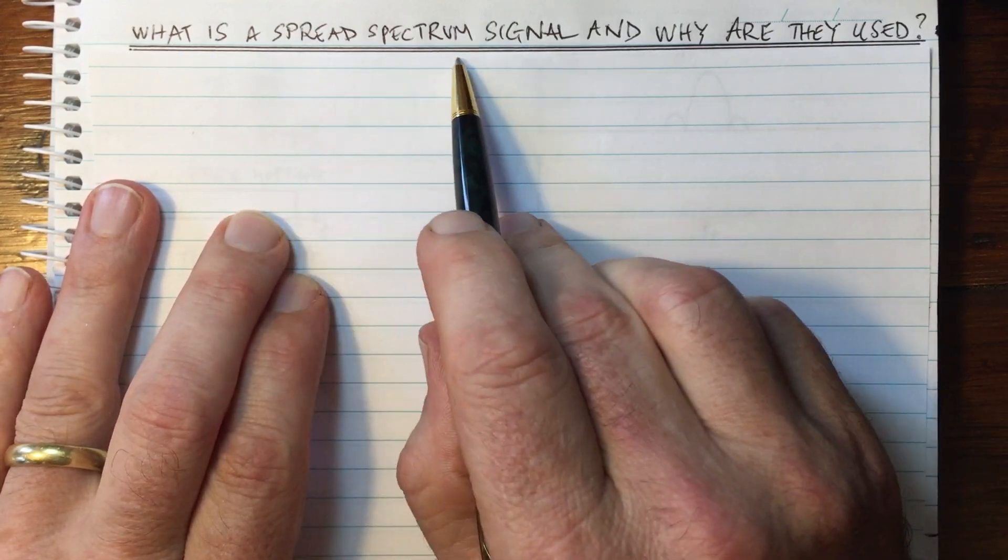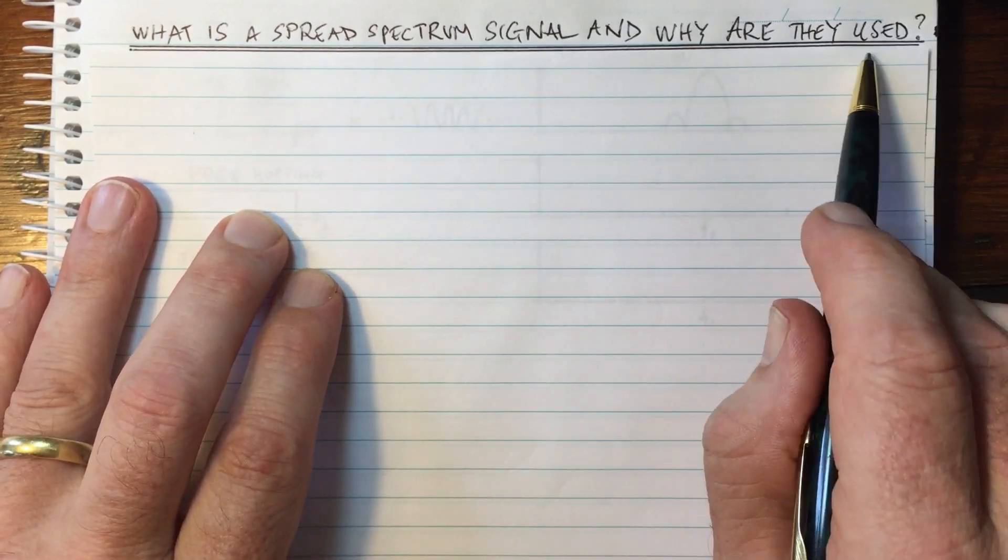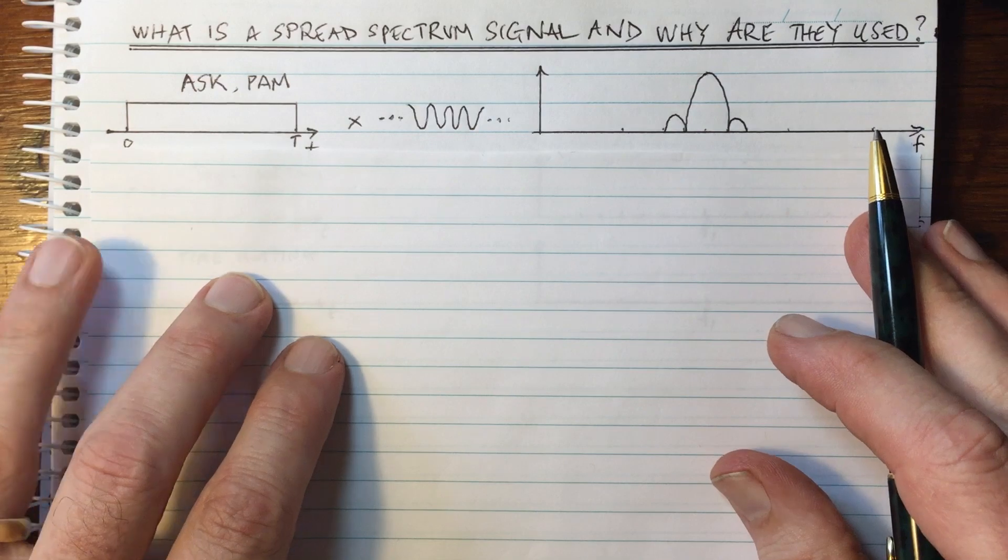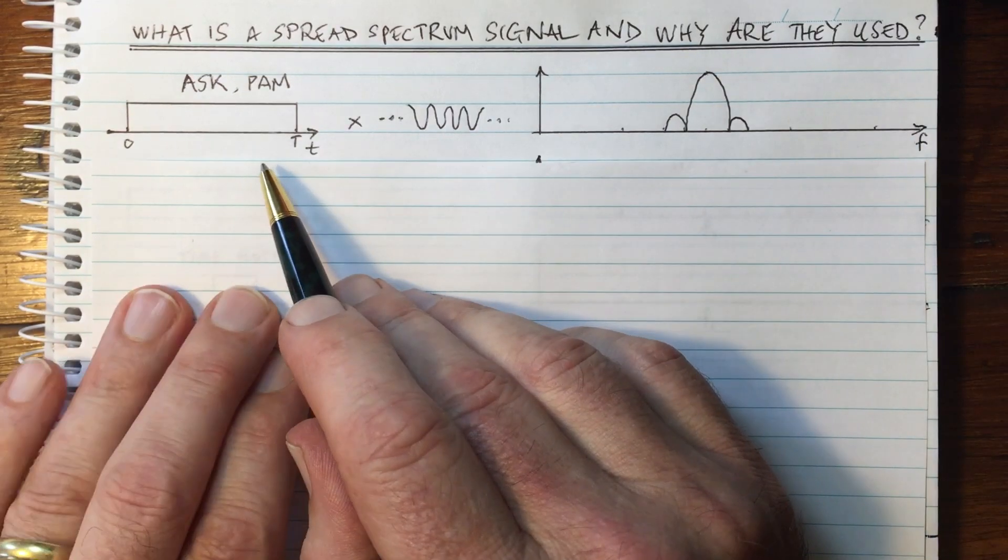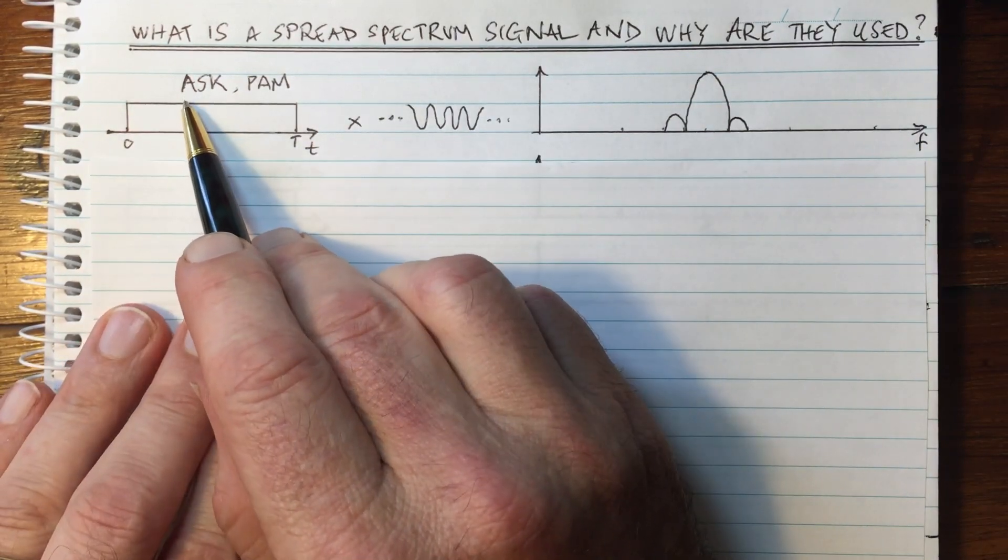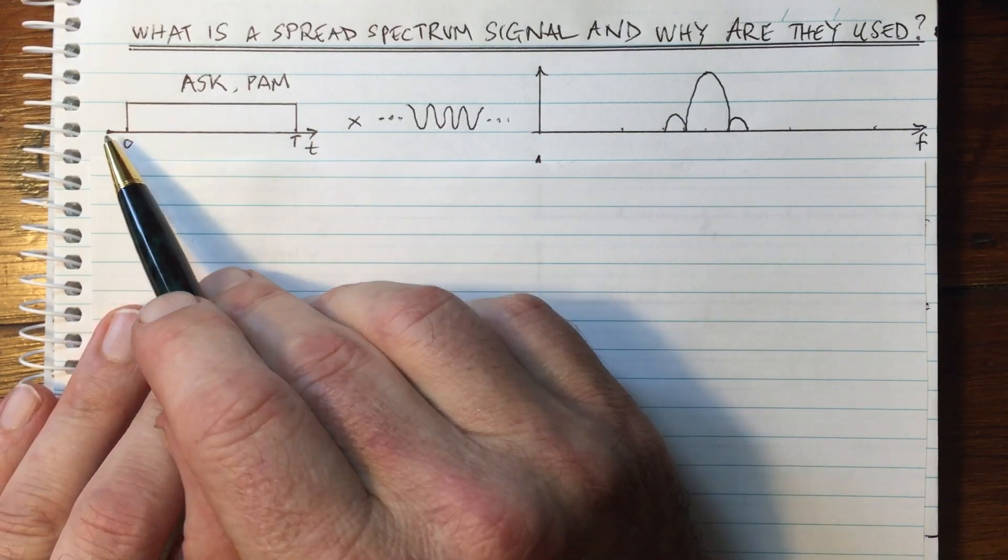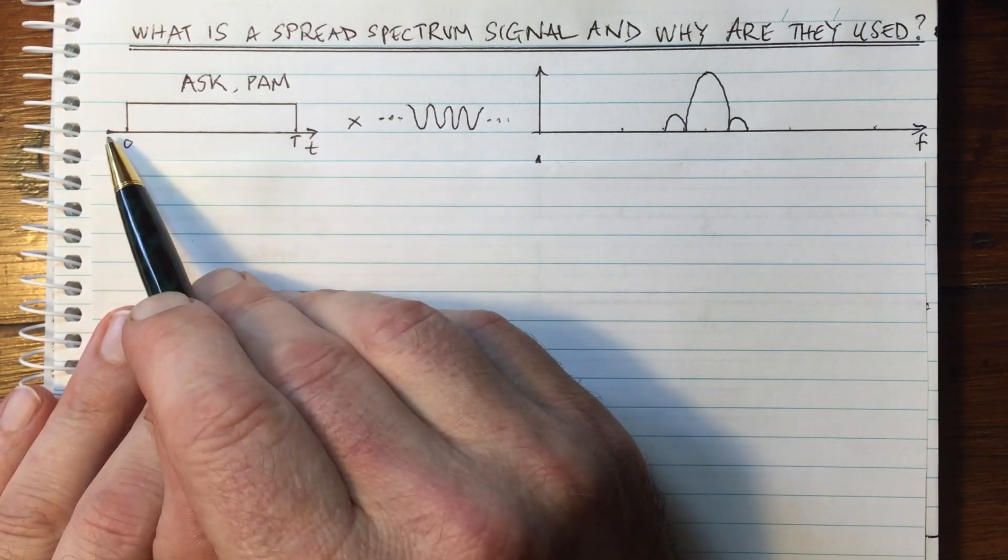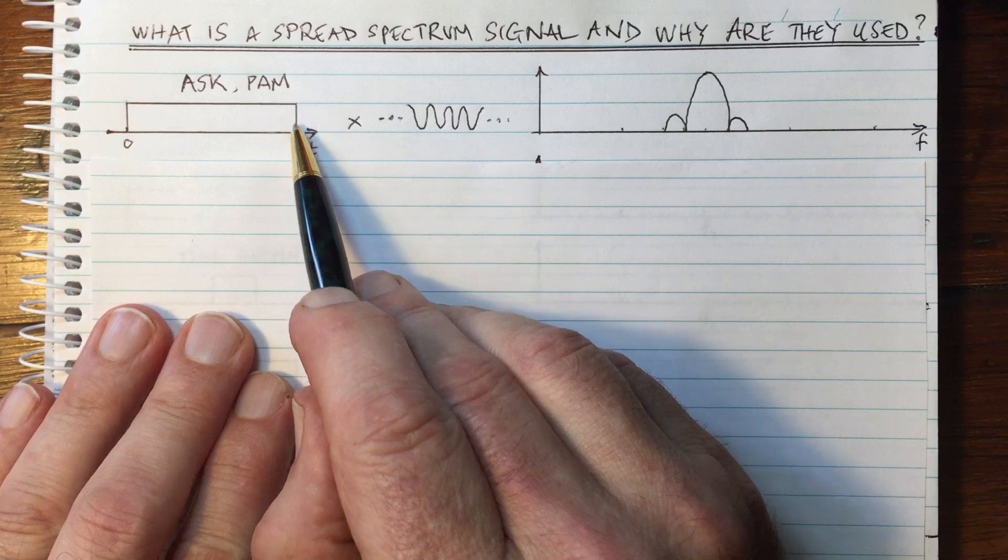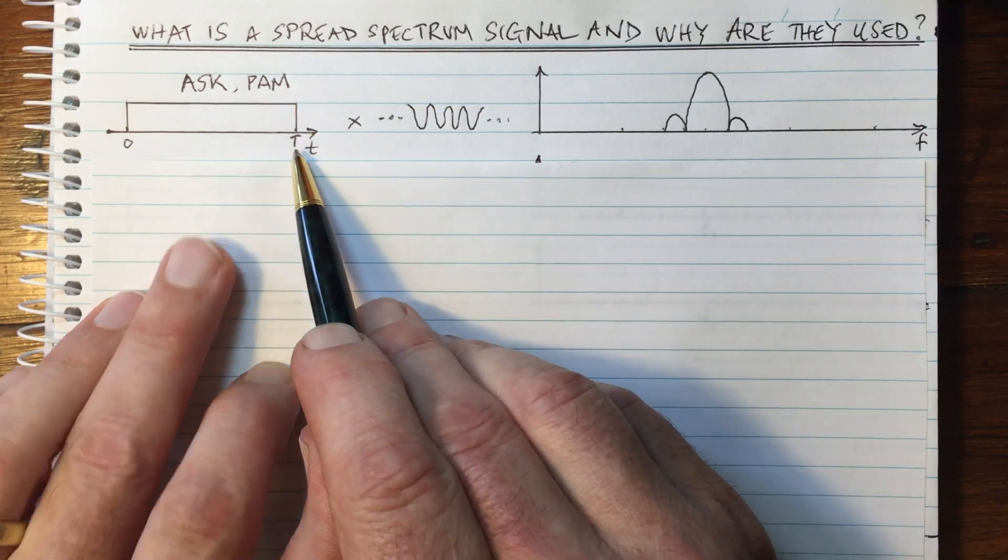What is a spread spectrum signal and why are they used? Well, let's start by looking at a standard signal. And here I'm showing either an amplitude shift keyed or pulse amplitude modulation signal, where in the time domain, we're going to send each of our digital symbols for a period of capital T.